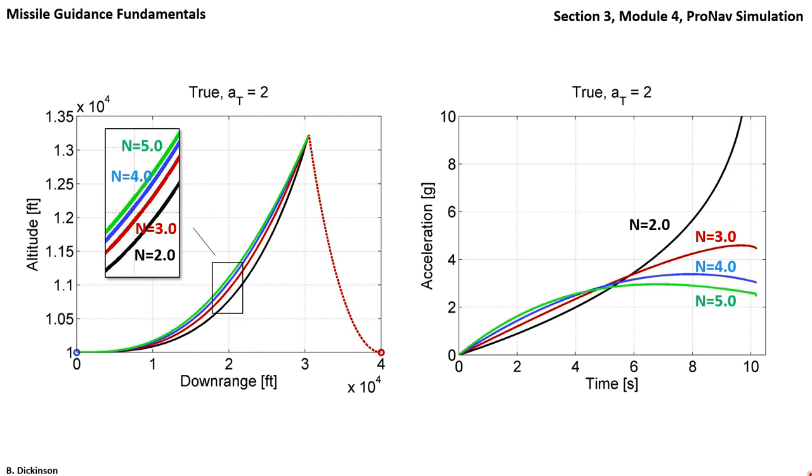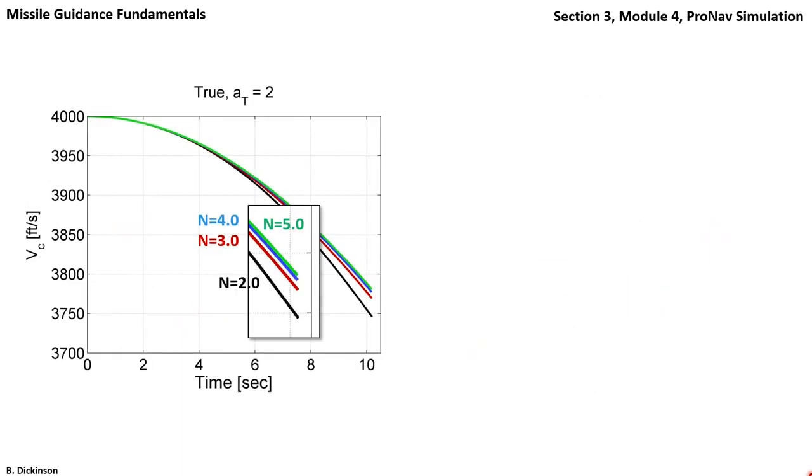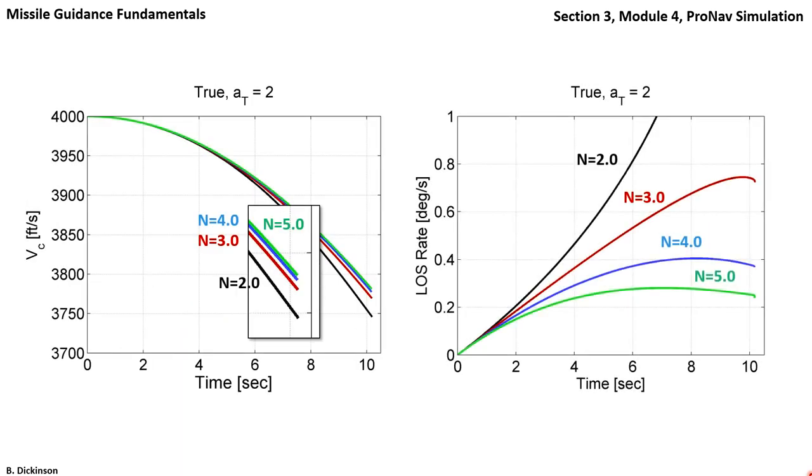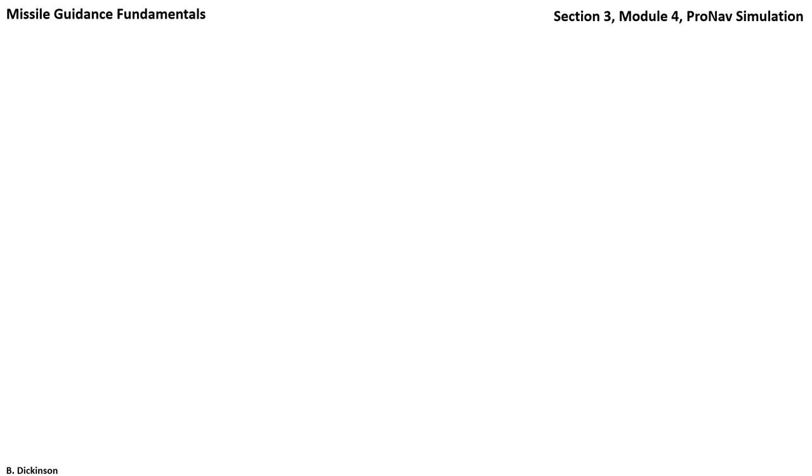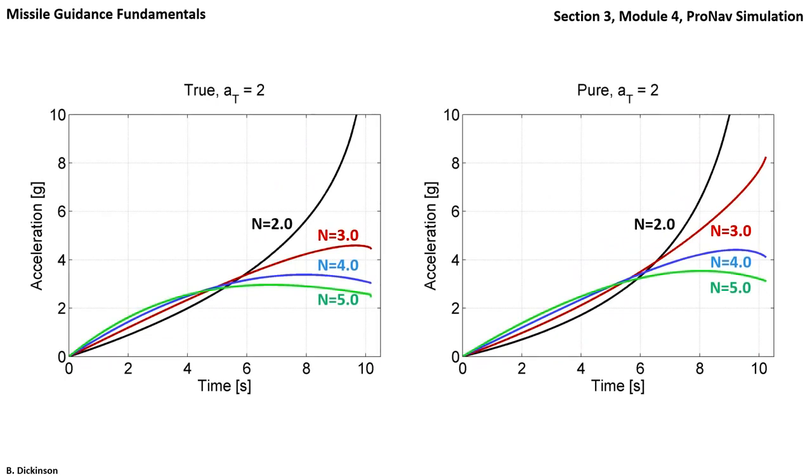Looking at the inputs to the pronav, closing velocity remains at about 4,000, while line of sight rate is the curve that's responsible for the form of the true pronav command. Just as acceleration diverges for N equals 2, so does it diverge for line of sight rate. Comparing true to pure in terms of trajectories, they're almost identical. The acceleration profiles also have similarities. One difference can be seen for N equals 3. For true pronav, the acceleration command is curved down, while for pure, it's curved up.